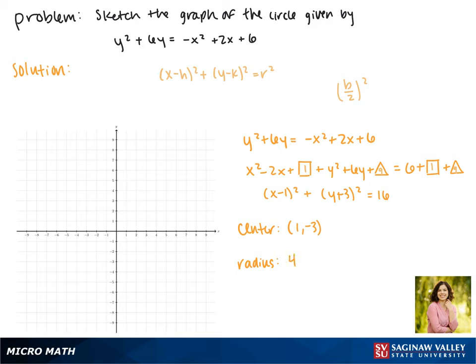So now we can graph our center and these points, which are each 4 units away, and this is the graph of our circle.